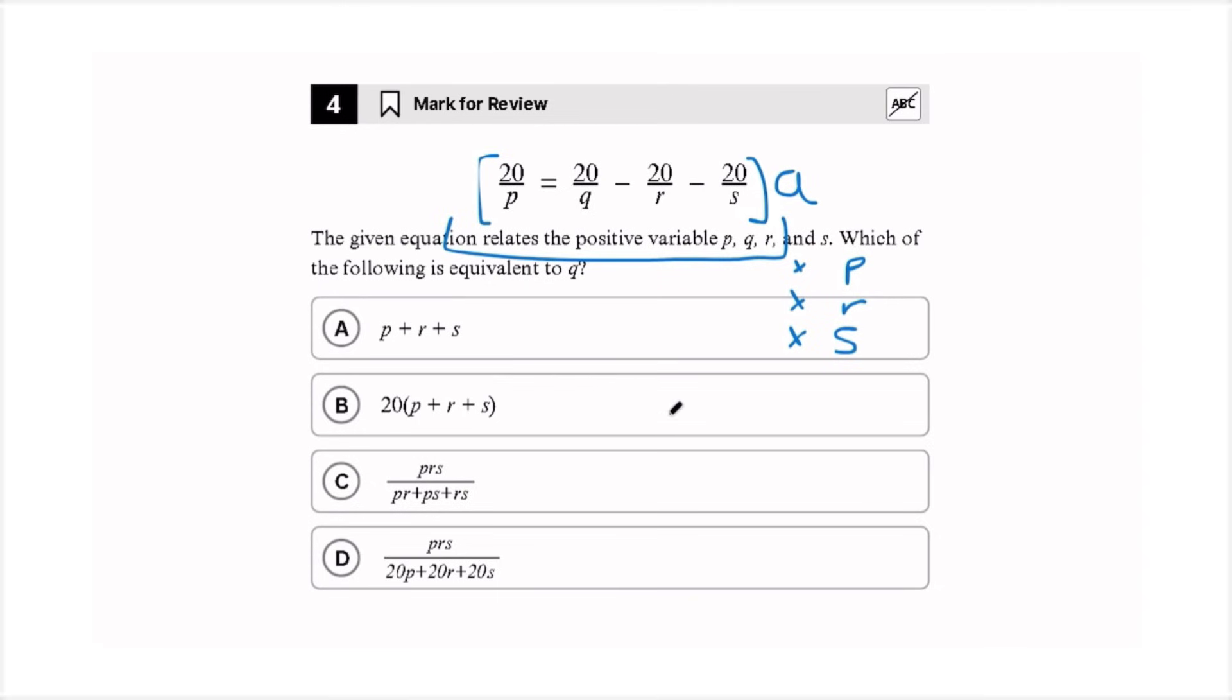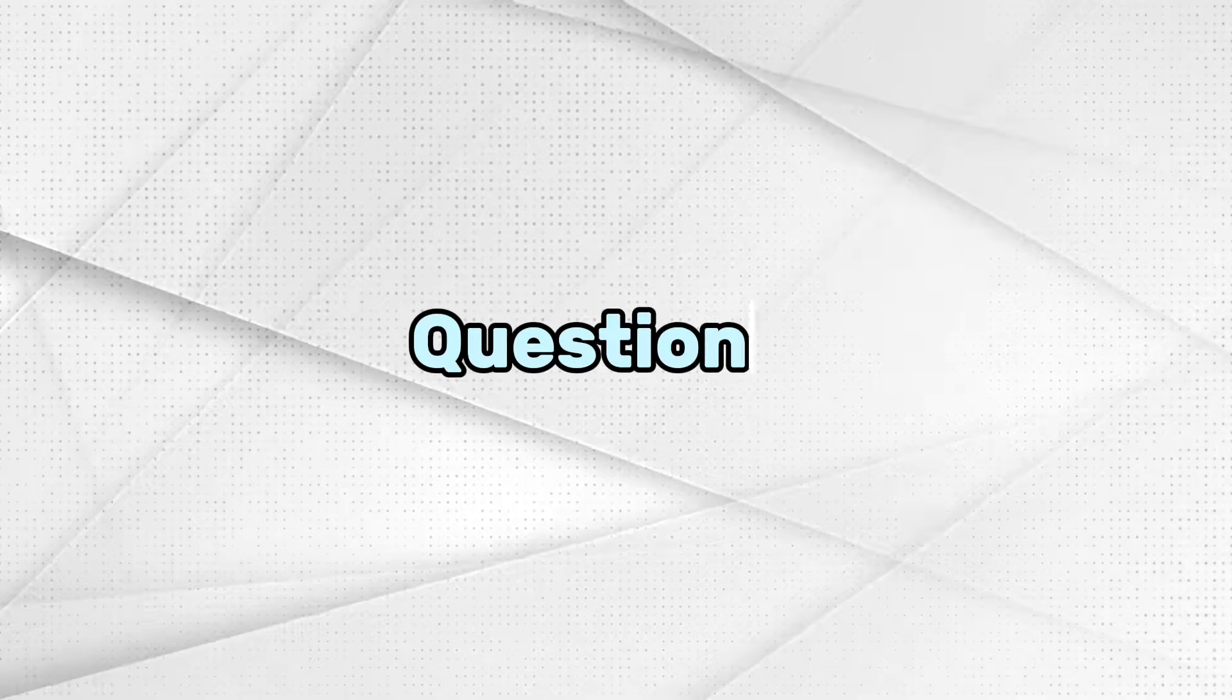And then we'll multiply it by R and then by S. So when we end up multiplying this equation by every single variable, we end up getting 20 QRS plus 20 QPS plus 20 QPR is equal to 20 PRS. Now we can simplify this down into Q times RS plus PS plus PR equals PRS. Now we isolate Q and we get PRS over RS plus PS plus PR, and that's equivalent to C. Now let's move on to the final question.